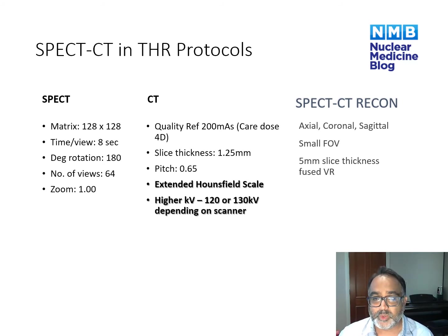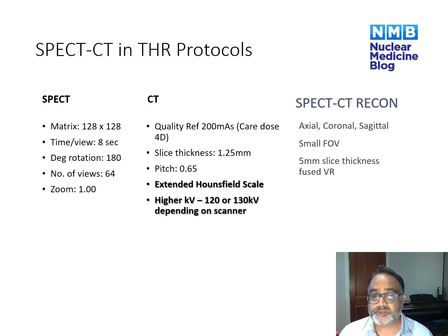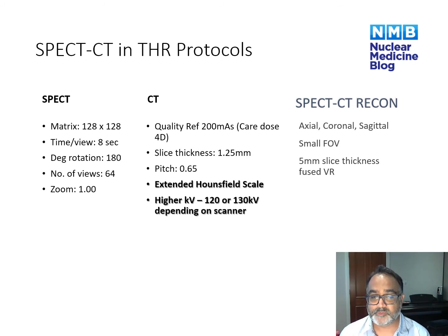When we reconstruct the images, we perform axial, coronal, and sagittal reconstructions. We also perform a small field of view reconstruction of the hip that we're interested in, and we use slightly thicker slices for the reconstructions when we fuse them for the volume rendering images.